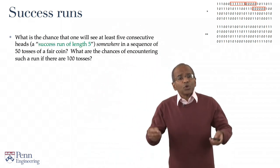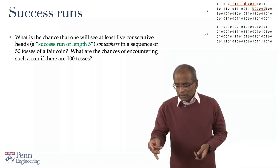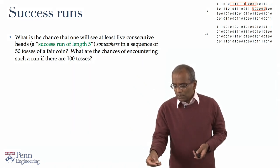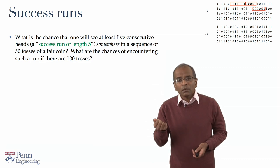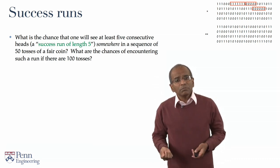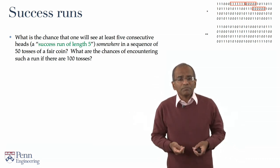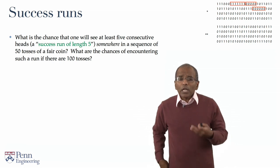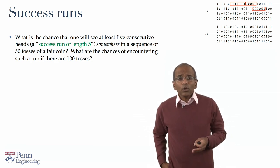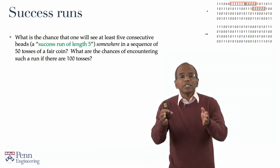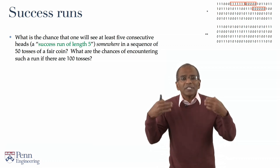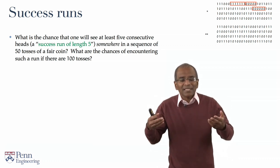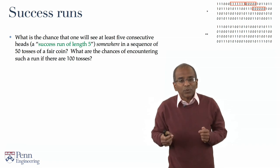We are tossing a coin repeatedly, say 50 times or 100 times. What is it we are looking for? We are looking for consecutive sequences or runs of successes or heads or ones in the sequence.